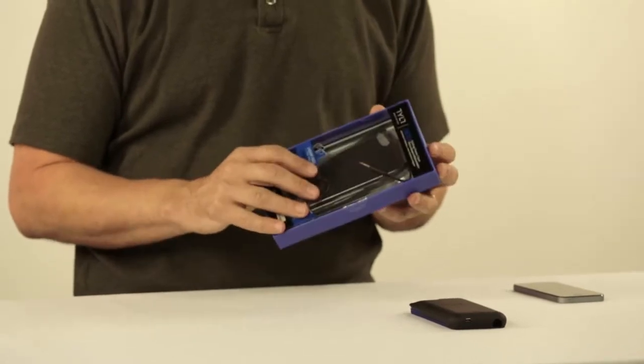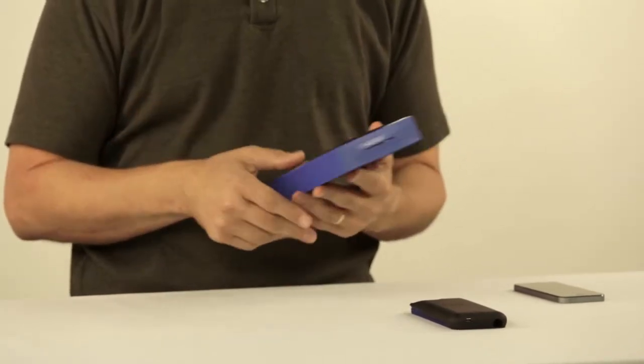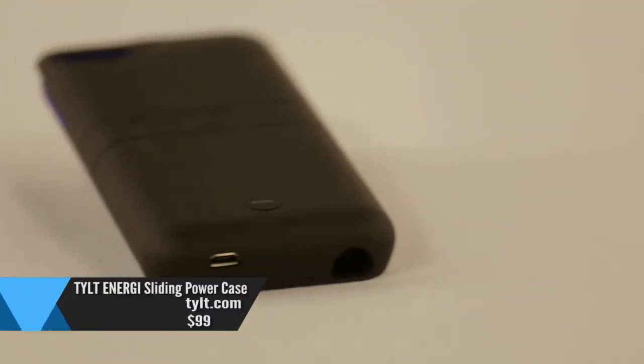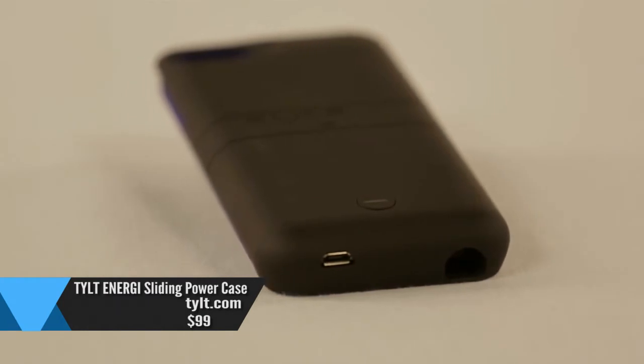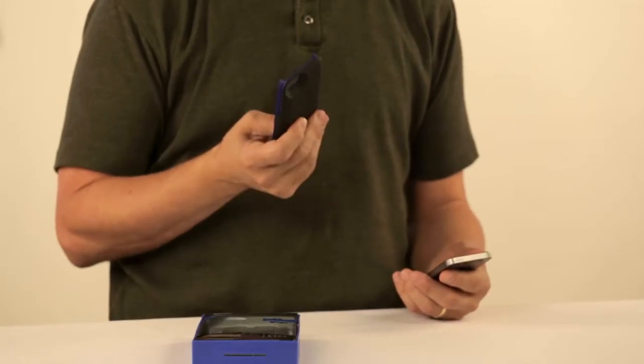Tilt, which is a company that has a whole bunch of really cool products, has the sliding power case, which I have fallen in love with. It's a 2100 milliamp hour battery. What does that mean? For your iPhone 5 or 5S, it gives you about an extra nine hours of talk time, which is pretty impressive.